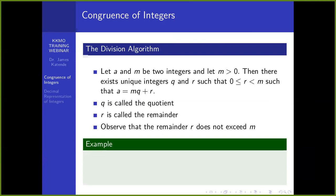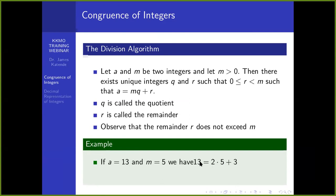Let's look at an illustration so that we can understand it better. If we pick A is 13 and M is 5, then we can write it as 13 equals 2 times 5 plus 3. This is exactly what you do in division: divide 13 by 5, and the remainder will be 3.